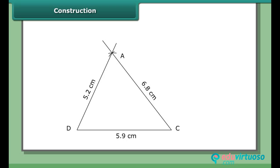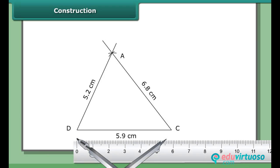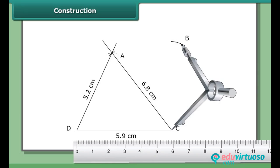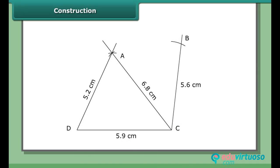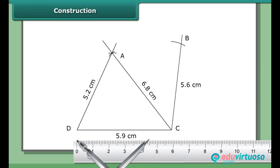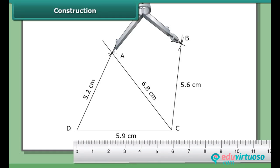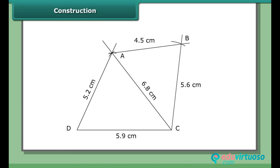Constructing triangle ABC. Then ABCD is the required quadrilateral.